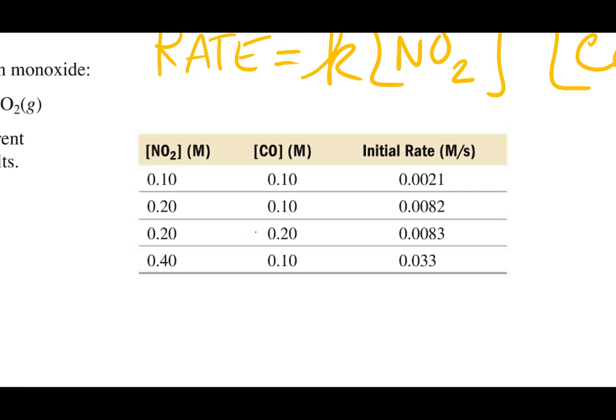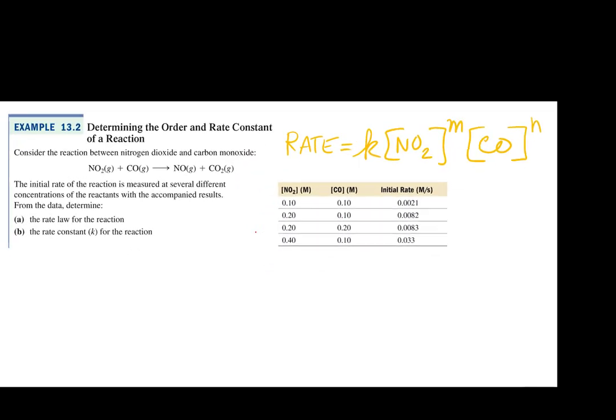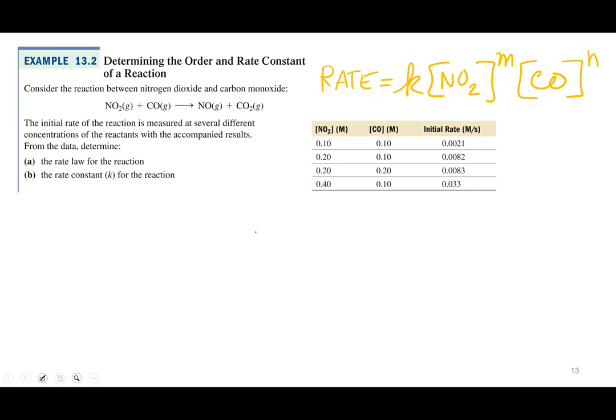For the rate order of NO₂ I can use trials one and two, or one and four, or two and four. For the rate order of CO, what trials can I use? Trials two and three — CO changed from 0.10 to 0.20 and the concentration of NO₂ stayed the same. There's only one set of trials available for CO. When there's more than one reactant, you have to make sure only that reactant's concentration changed across the trials you pick.